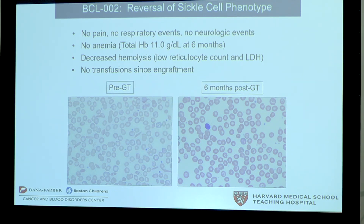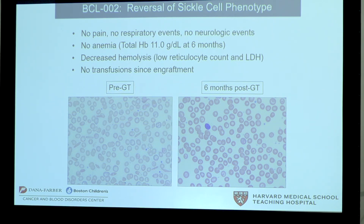Finally, our subject thus far has experienced reversal of sickle cell phenotype. There's been no pain, respiratory events, or neurologic events. The patient is not anemic, with a normal total hemoglobin of 11 grams per deciliter at six months, and laboratory evidence of much decreased hemolysis with a low reticulocyte count and LDH. There have been no transfusions required since engraftment. The photos below show peripheral blood smears from our patient. Before gene therapy, on the left, you can see quite a few irreversibly sickled cells, which are the small, sickle-shaped, narrow cells. Six months after gene therapy, there are no visible sickled cells on the peripheral blood smear.